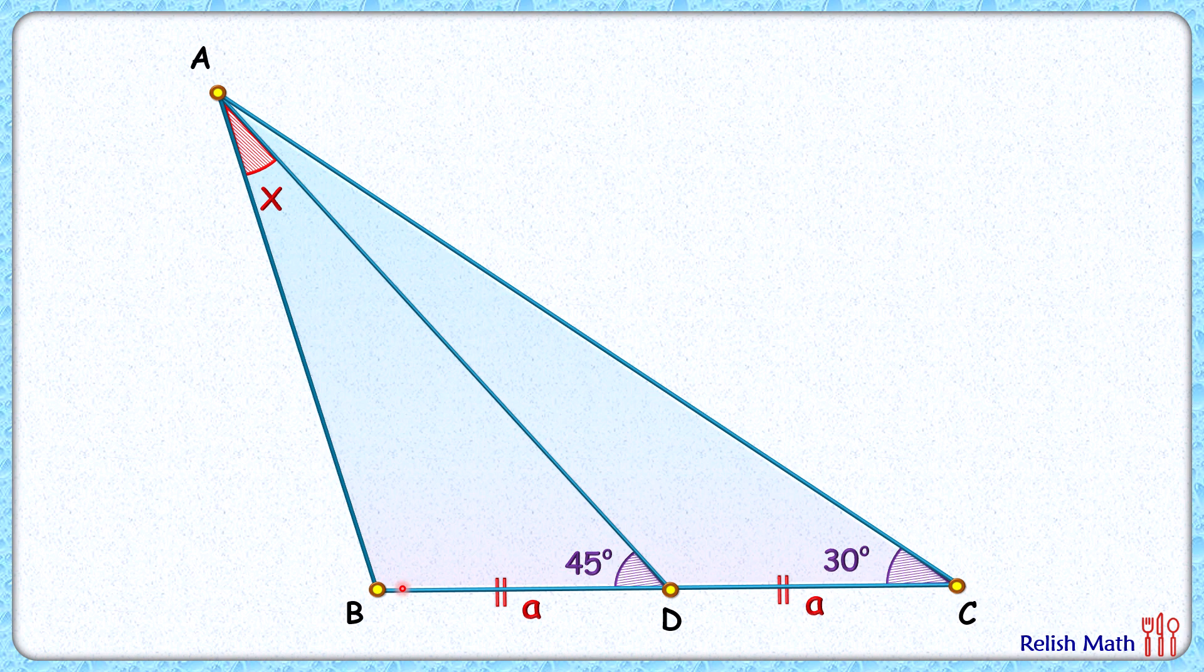From point B, let's drop a perpendicular on AC. Now this triangle BEC, two of the angles are 90 and 30, and the third angle will be 60 degrees. Let's join ED here.